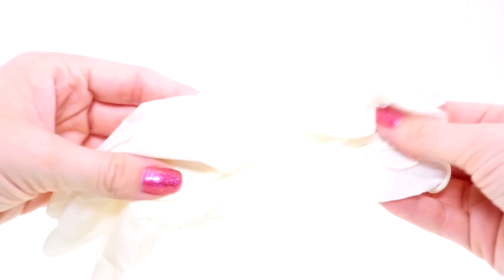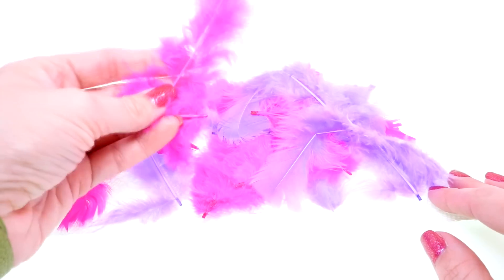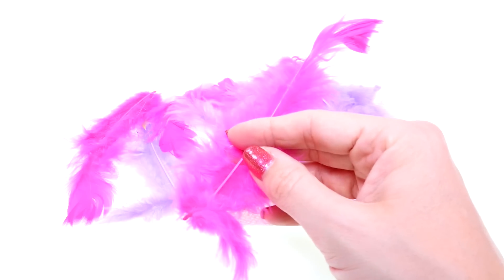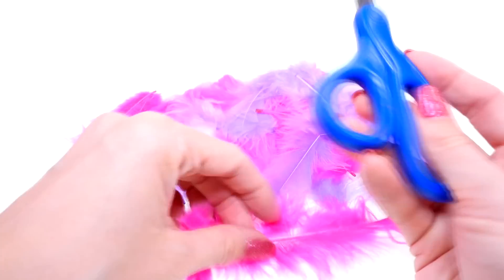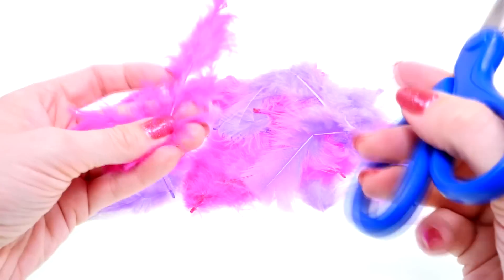I'm going to be using some latex gloves so that I don't get glue all over my fingers. I picked out all the colors of feathers that I want to use, I'm going to be using pink and purple this time, and what I'm going to do to get the feathers ready is to just trim away this really rigid part right here.